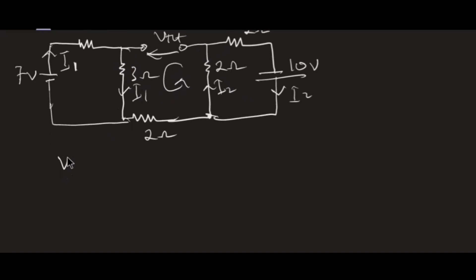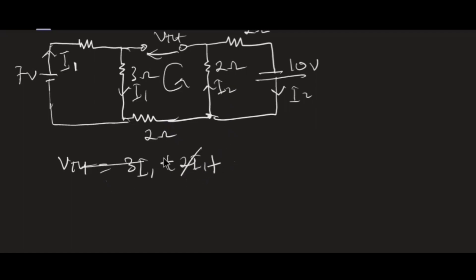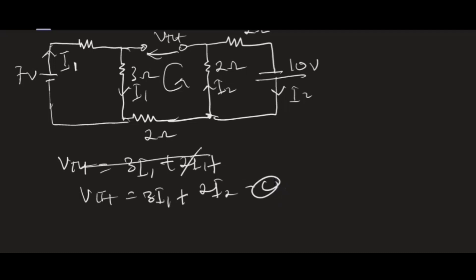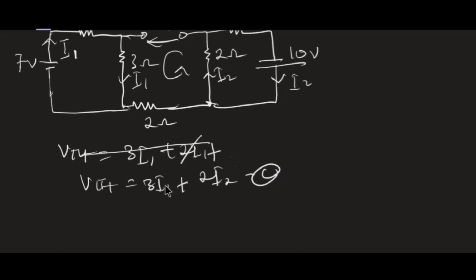Taking the loop containing VTH, I write: VTH = 3·I1 + 2·(0) + 2·I2 + 2·I2. There is no current through the middle 2 ohm resistor, so that term is zero. The equation simplifies to: VTH = 3·I1 + 4·I2.